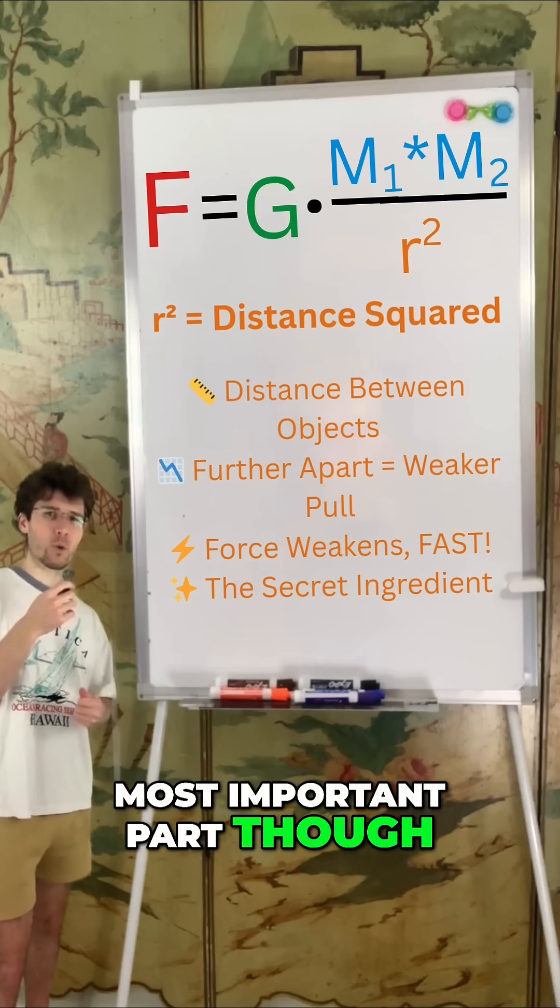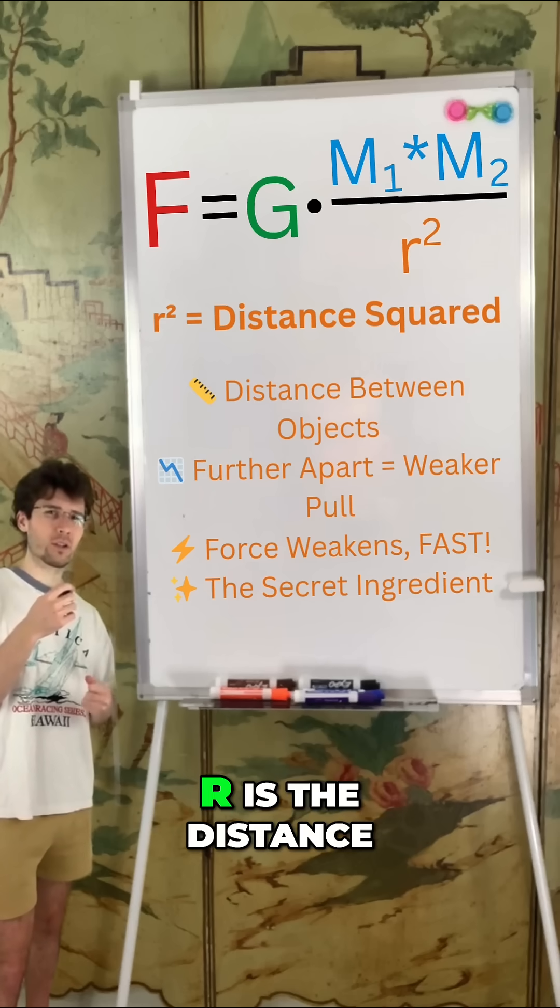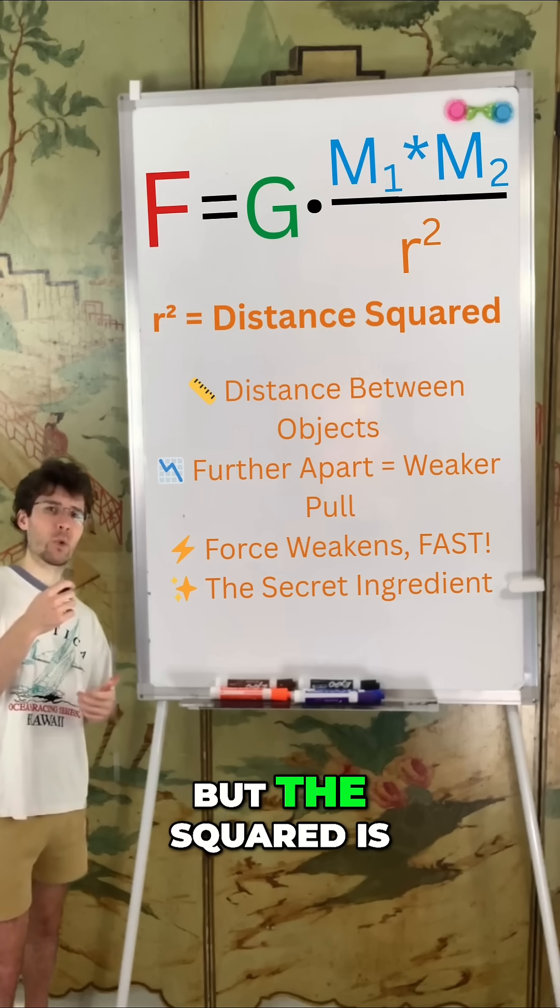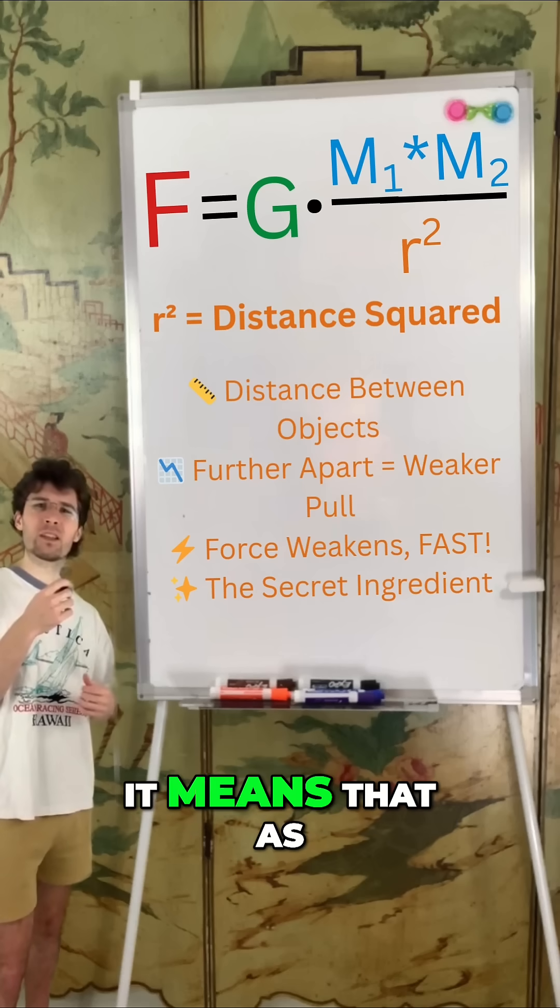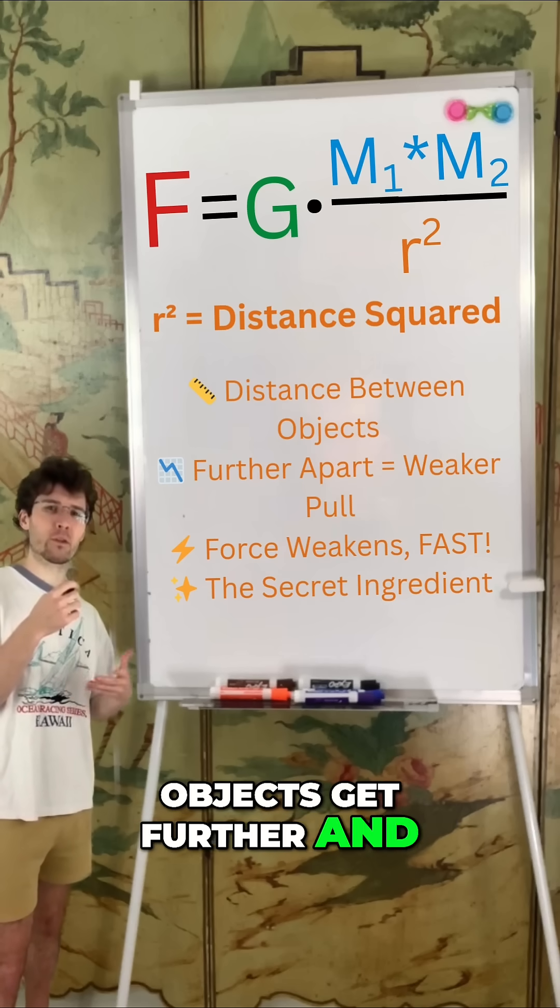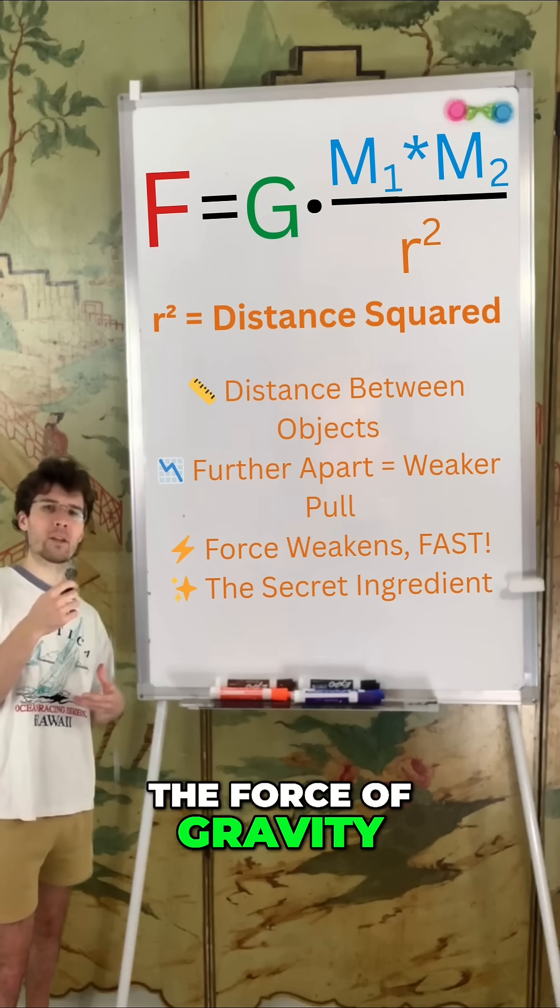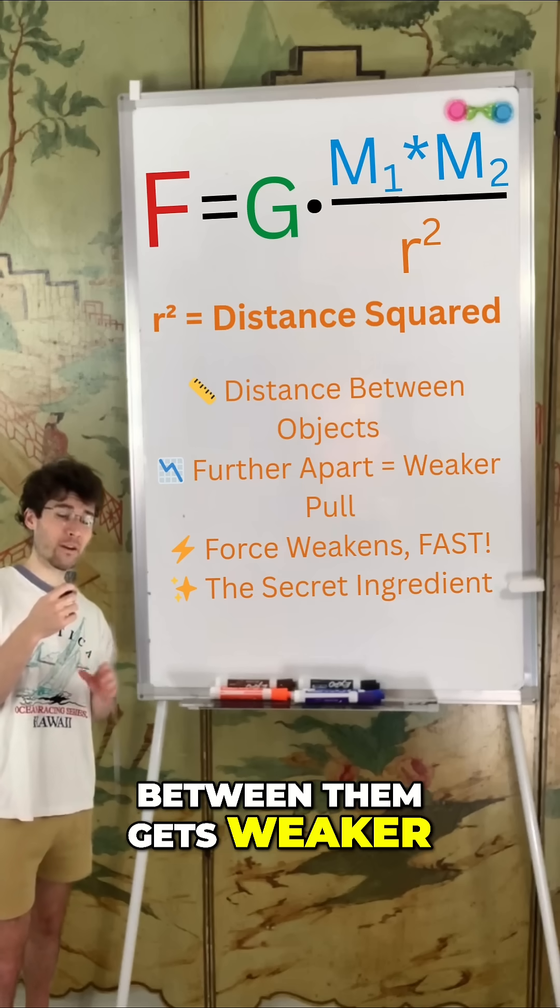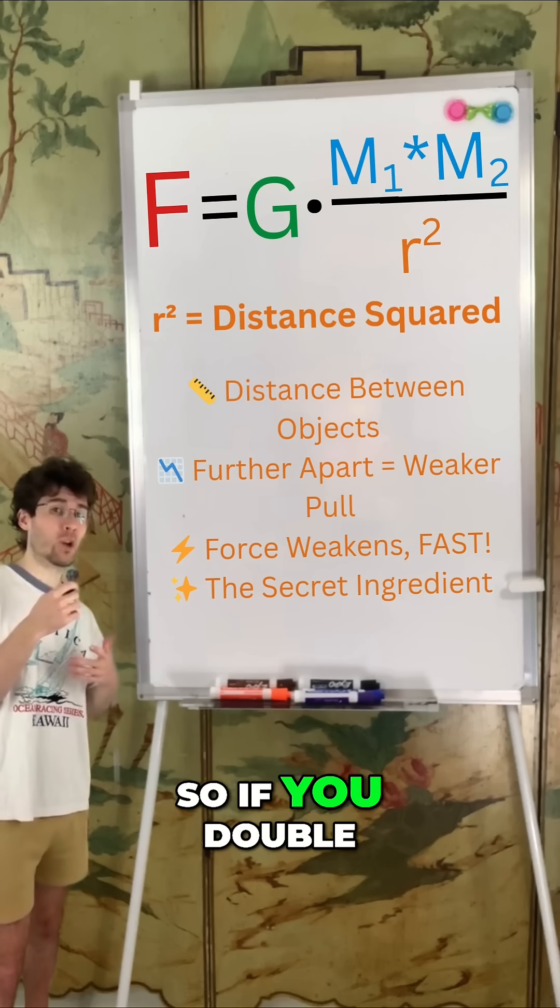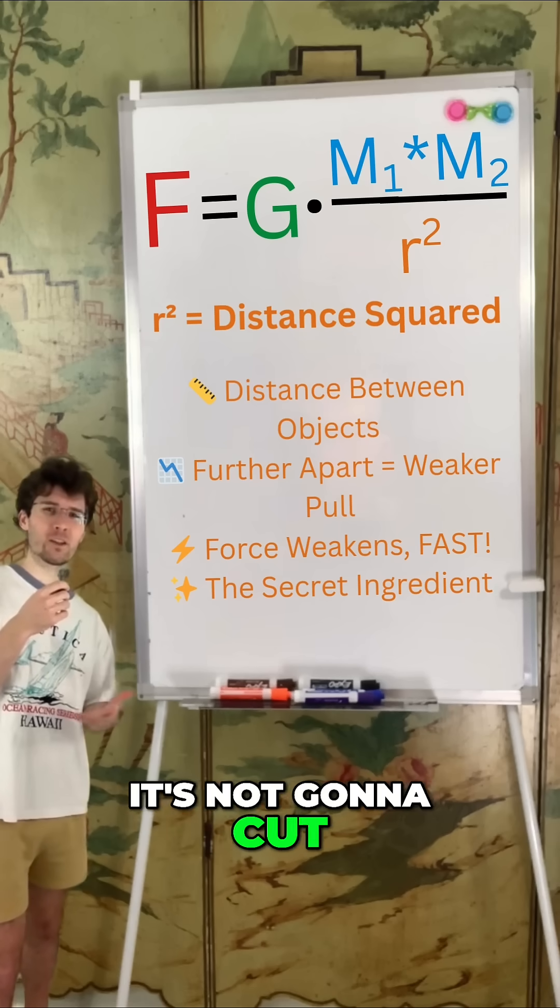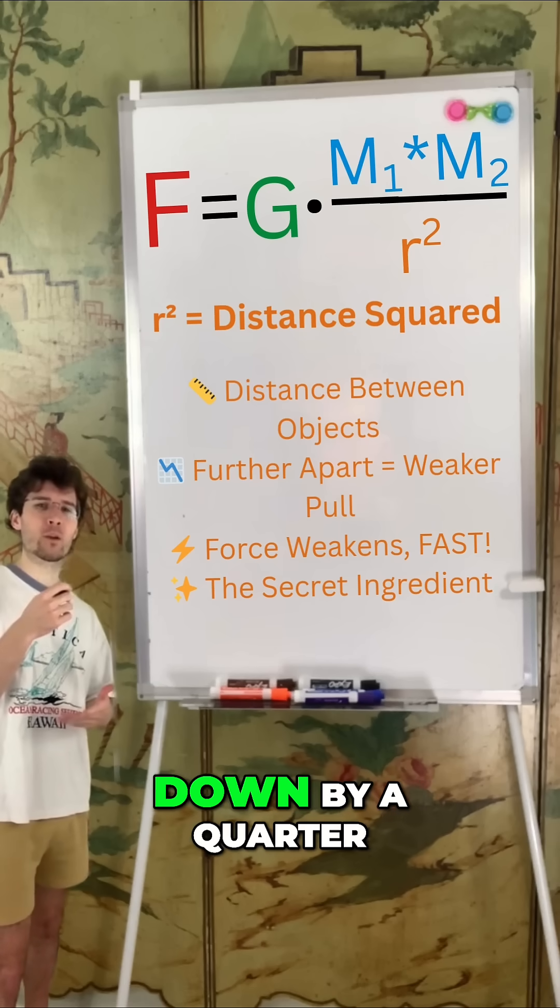The most important part though is r squared. R is the distance between the two objects, but the squared is the secret part. It means that as objects get further and further apart, the force of gravity between them gets weaker very quickly. So if you double the distance, it's not going to cut the gravity in half. It's going to cut it down by a quarter.